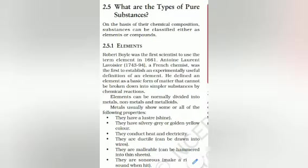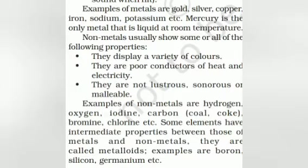Metals are ductile — they can be drawn into wires. They are malleable — they can be hammered into sheets. They are sonorous — when struck, they make a sound. Examples of metals are gold, silver, copper, iron, sodium, potassium, etc. Mercury is the only metal which is liquid at room temperature.